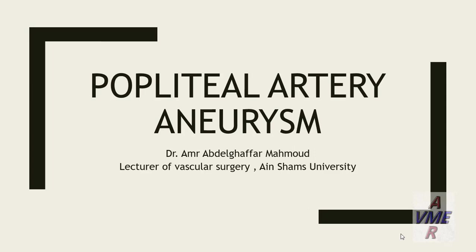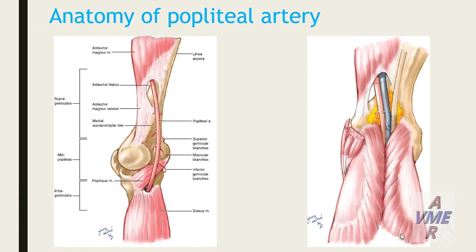Good evening, everyone. Today we are talking about the popliteal artery aneurysm. The anatomy of the popliteal artery is the continuation of the superficial femoral artery after passing through the adductor hiatus, ending at the lower border of the popliteal muscle.